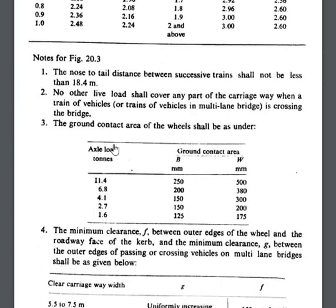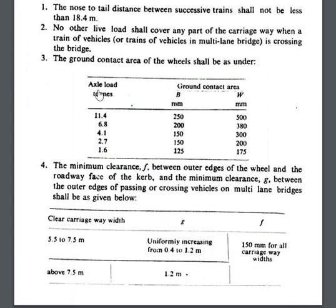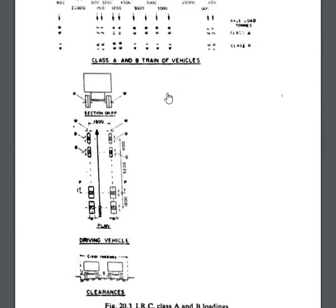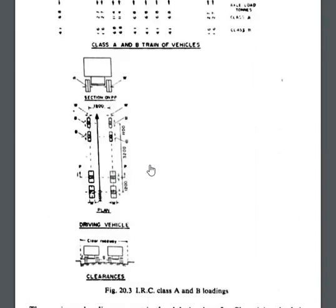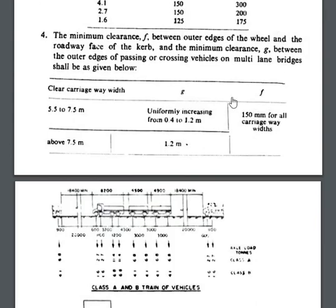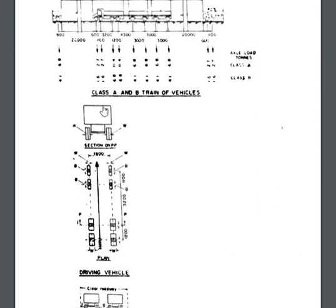This is for IRC class A and B type of vehicles. Two clearances are defined: F is the minimum clearance between the outer edge of the wheel and the roadway face of the curb, and G is the minimum clearance between the outer edges of passing or crossing vehicles on multi-lane bridges. The values are specified here.